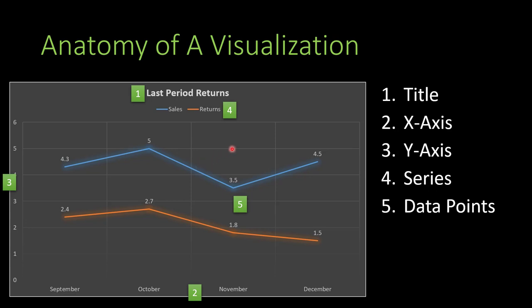This particular visualization shows two sets of data: the blue line and the orange line. These are called series. In this case, the blue line represents sales and the orange line represents returns. Not only do you get to see the data independently — sales went down from October to November — but you also get to see the relationships between the data. Sales went down, but returns went down too. Then in December, returns continued to go down but sales went up, which is a good trend.